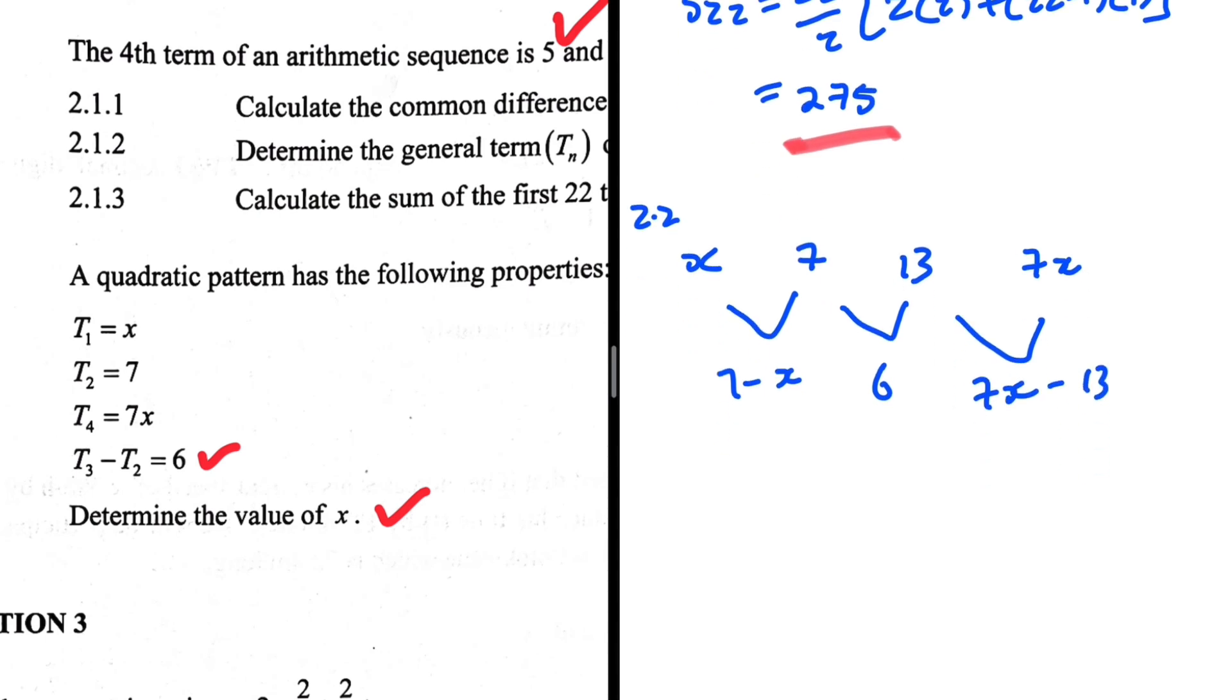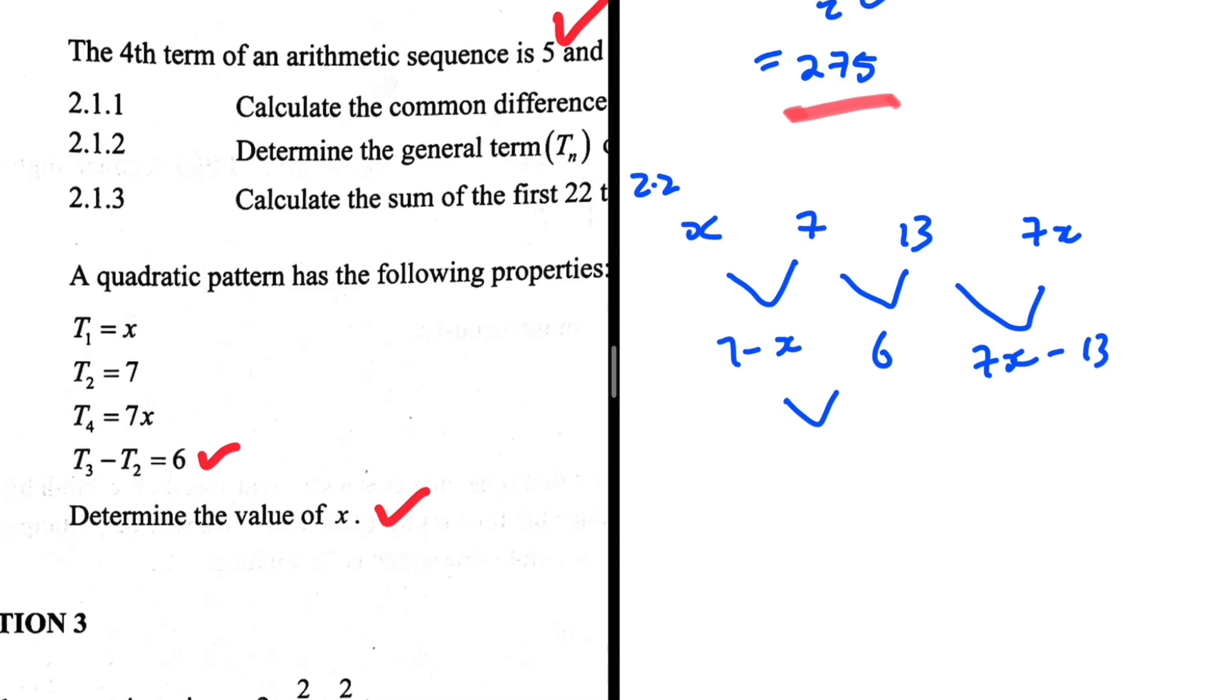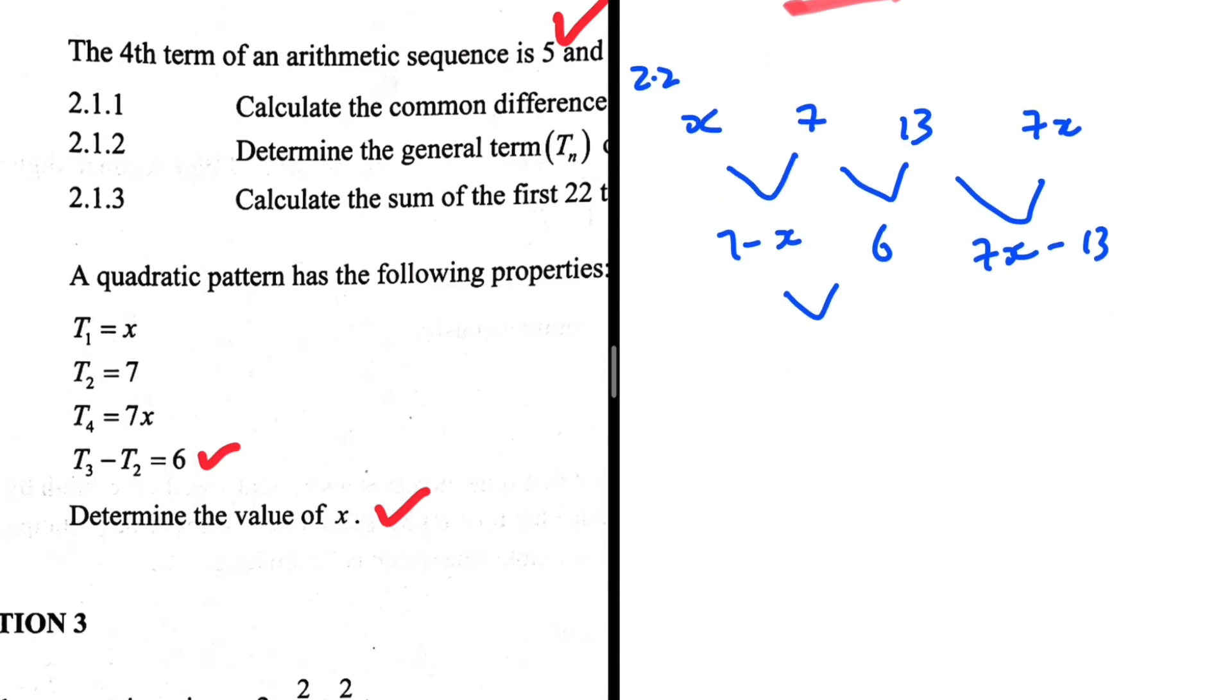Okay, so these differences they form an arithmetic pattern. So if we say these, t2 minus this t1 is equals to this t3 minus t2, we should get the value of x, because those form an arithmetic sequence and we have a common difference. Let's see. What is 6 minus, so we have, let me write it somewhere else. So we have 6 minus (7 minus x). I'm writing it like this because I don't want to make a mistake.